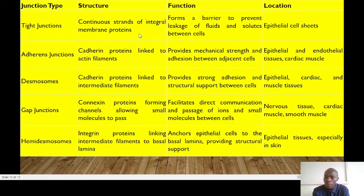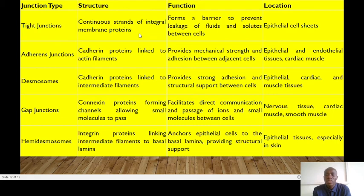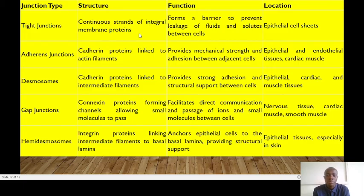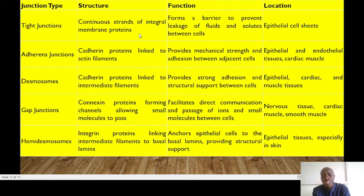Lastly, hemidesmosomes are made up of integrin proteins that link intermediate filaments to the basement membrane laminin. In terms of function: tight junctions form a barrier to prevent leakage of fluids and solutes between cells; adherent junctions provide mechanical strength and adhesion; desmosomes provide strong adhesion and structural support; gap junctions facilitate direct communication and passage of ions and small molecules; and hemidesmosomes anchor epithelial cells to the basement lamina, providing structural support.